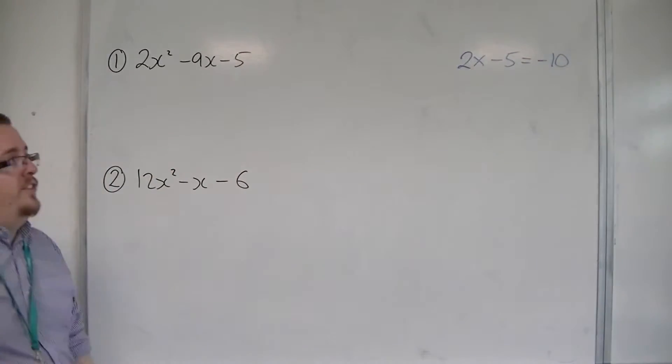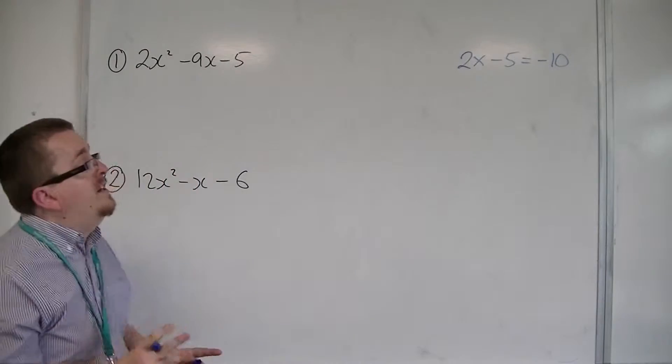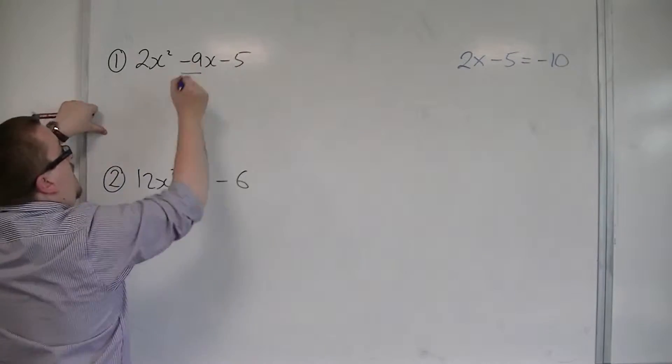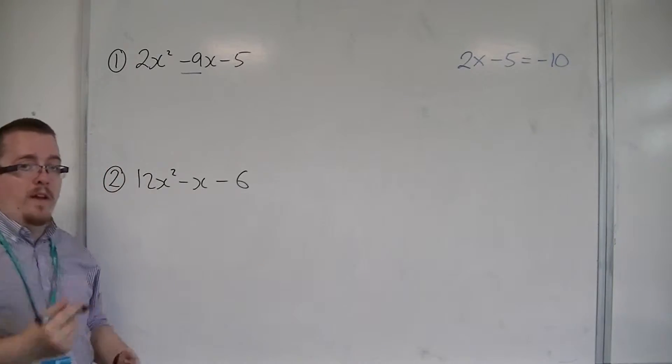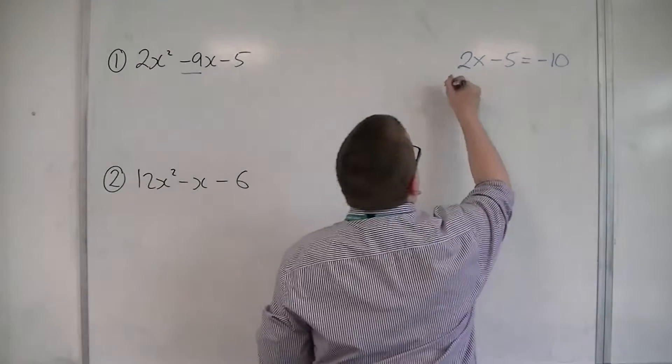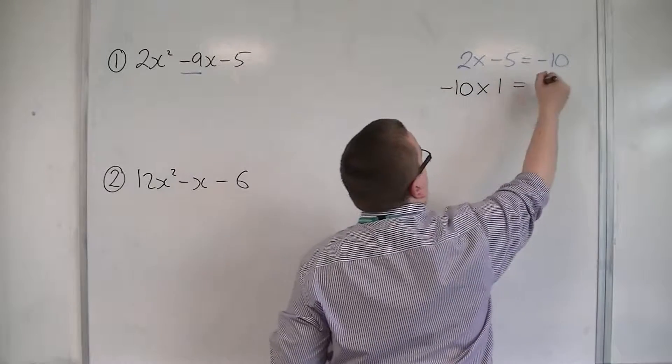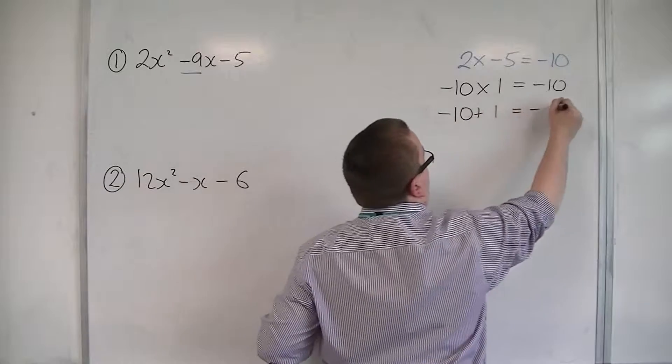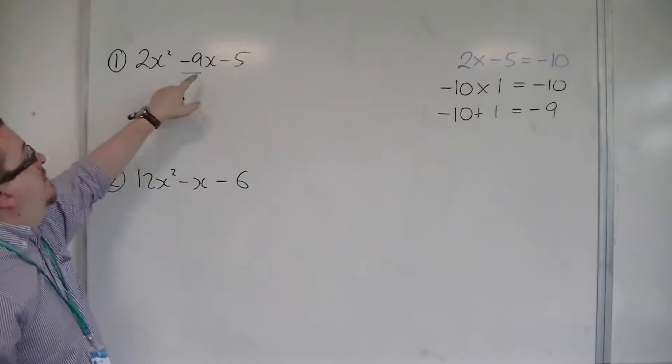Now what we're going to do is try to find two numbers that multiply together to make minus 10 but add together to make minus 9. So two numbers that do that is minus 10 and 1. Because minus 10 times 1 is minus 10 and minus 10 plus 1 is minus 9. And so they multiply together to make minus 10 but add together to make minus 9.